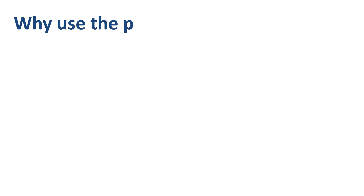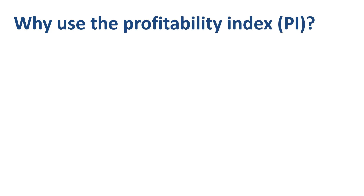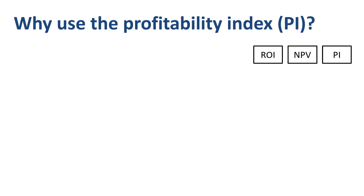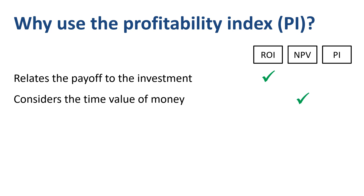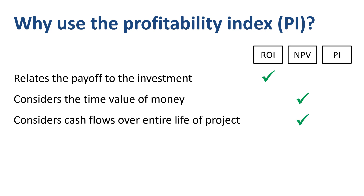Why would you use the Profitability Index method in capital budgeting when other tools like Return on Investment and Net Present Value already exist? ROI relates the payoff to the investment — the cash outlay or cost. NPV considers the time value of money and considers cash flows over the entire life of the project. The Profitability Index incorporates all three of these elements and is closely related to both ROI and NPV. Once you understand how to calculate ROI and NPV, it is very easy to calculate the Profitability Index.